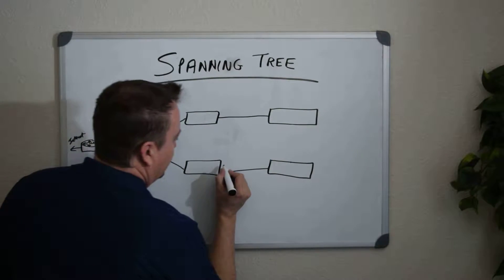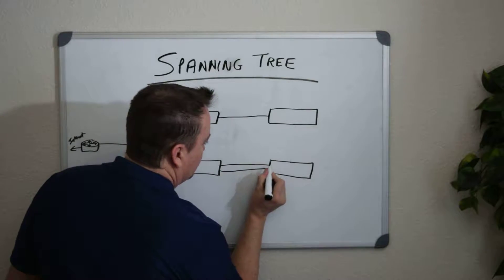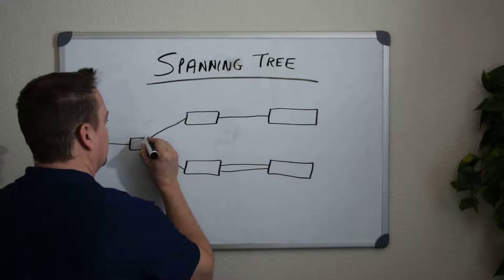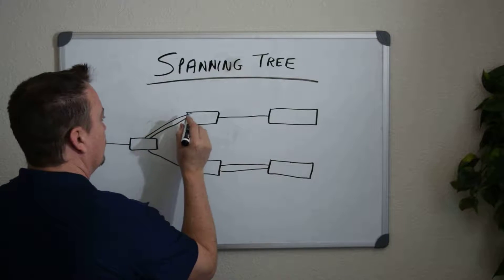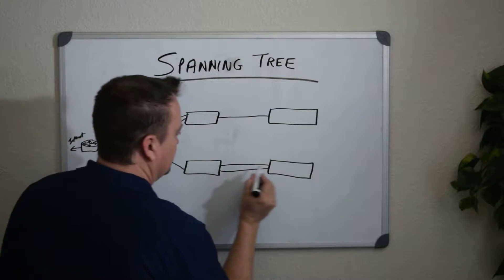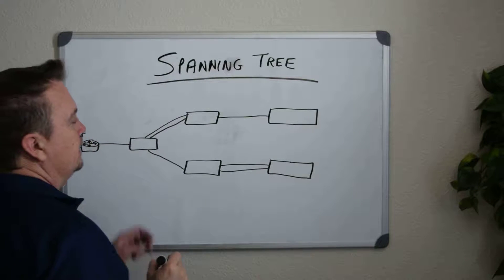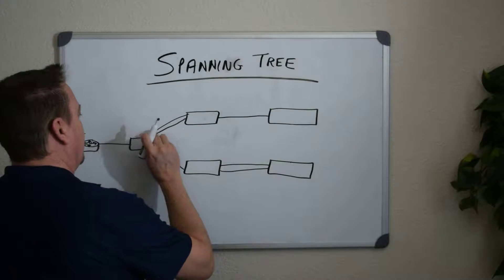But another case is you might connect inadvertently two cables between these two switches, or two cables between these two switches, and you are in essence creating physical loops here. Spanning Tree wants to prevent these loops, and here's why.